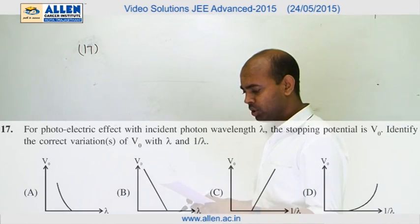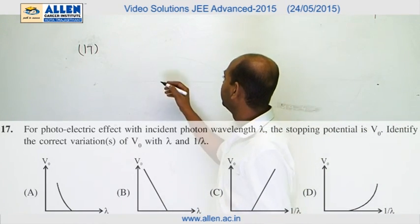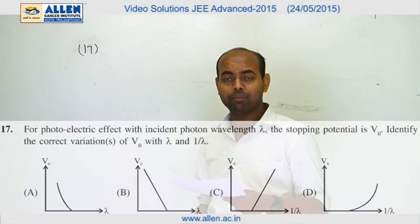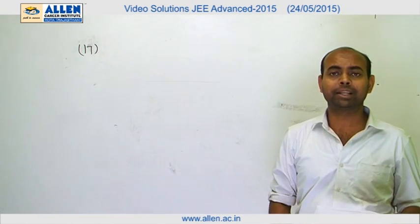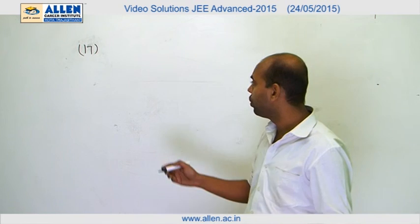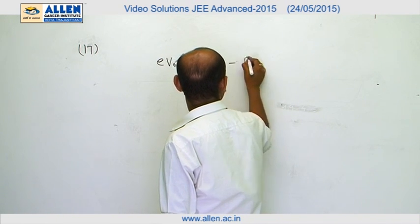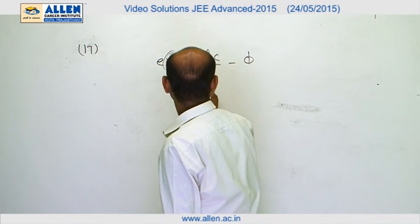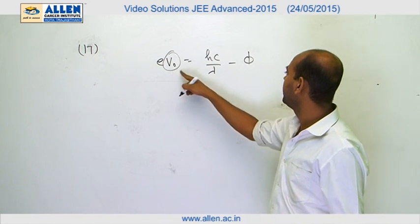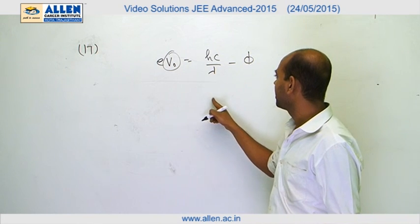Question number 17 is based on the photoelectric effect. They have asked us to draw the graph between stopping potential and lambda, and stopping potential and 1 by lambda. We know EV0 equals HC by lambda minus phi, where V0 is the stopping potential.